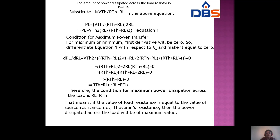When we get maximum power, the source resistance is taken as Rth and load resistance as RL. So Rth = RL. This means if the value of load resistance equals the value of source resistance (Thevenin's resistance), then the power dissipated across the load will be at its maximum value.